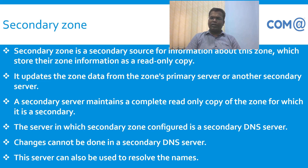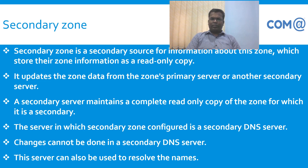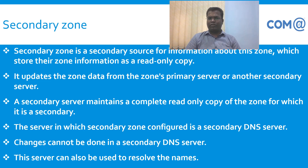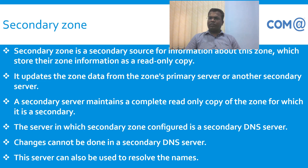The secondary zone is configured in different scenarios. It distributes the load to the secondary DNS server. In case the primary DNS server fails, name resolution is not interrupted. The secondary DNS server can be configured in the same location or a different location. For example, the primary DNS server is in one location and the secondary DNS server is in an off-site location.